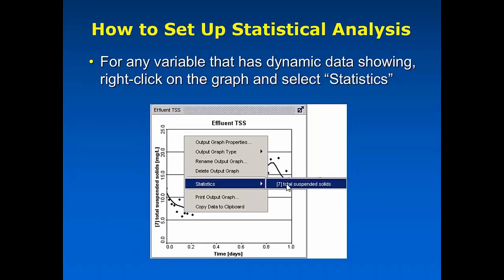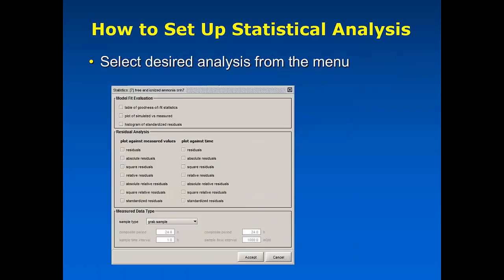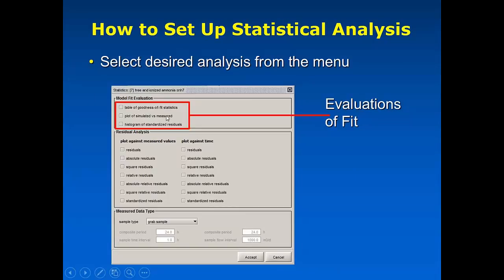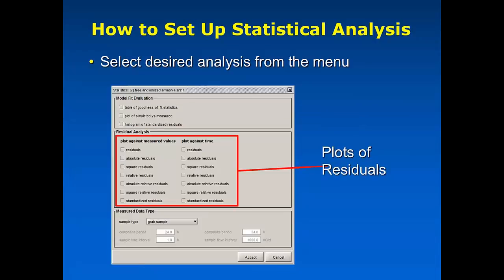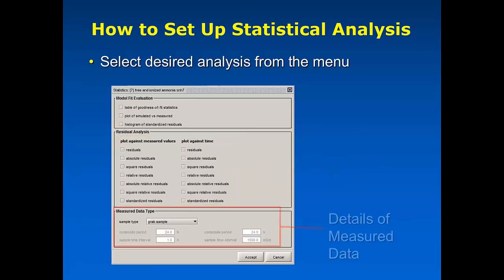Once you've set up your model, run your simulation, and imported your data as normal, adding the statistical analysis is as simple as right-clicking on a graph, selecting the statistics menu, and then selecting the particular parameter you want to analyze. You can do this for multiple graphs and multiple parameters. The menu that comes up has three key parts: the evaluation of fit calculation, a plot of residuals — the difference between the data point value and the simulation value at the same point in time — and options for how to measure those residuals.